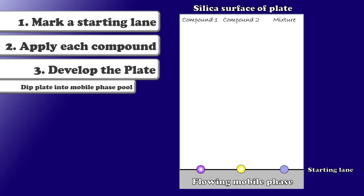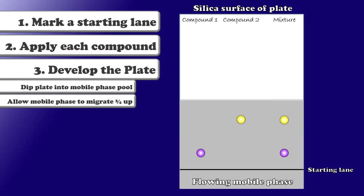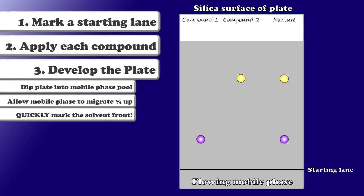As that flowing mobile phase moves up the plate, it will encounter the spots. And at this point, the spots have a choice. They can spend more of their time dissolved in the flowing mobile phase or more of their time adhered to the highly polar silica stationary phase. And as this happens, the spots migrate. Now notice that I've stopped my plate with the mobile phase about three quarters of the way to the top. I can't let my mobile phase reach the top as we're about to see because there's a very important calculation I need to perform.